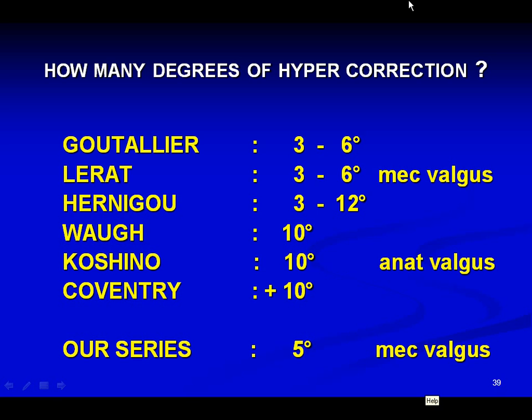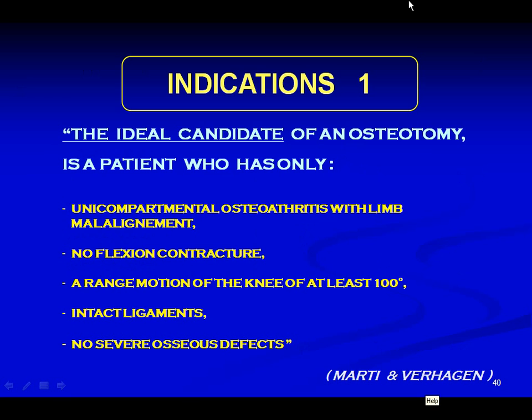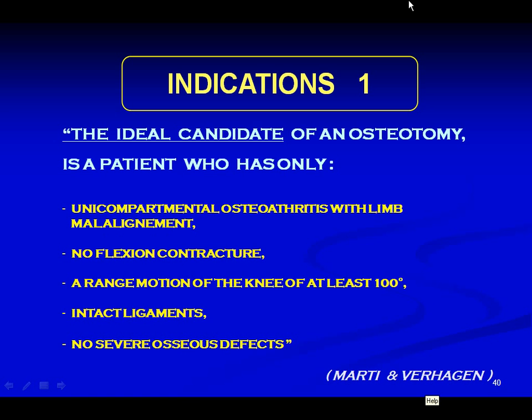Our indications differ slightly from Hatem's. With Marti and Verhager, we think the ideal candidate for osteotomy is a patient with only unicompartmental osteoarthritis with limb malalignment, no flexion contracture, a range of motion of at least 10 degrees, intact ligaments, and no severe osteosis defects. In summary, opening wedge is for grades 1 to 3 with wide varus angle up to age 65, while closing is reserved for medium varus in younger patients.